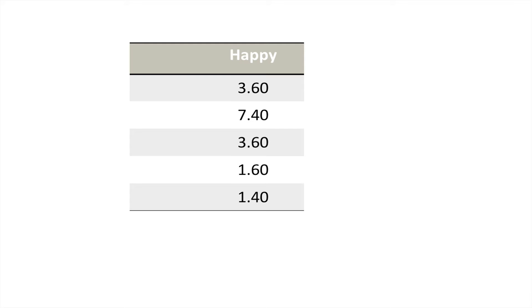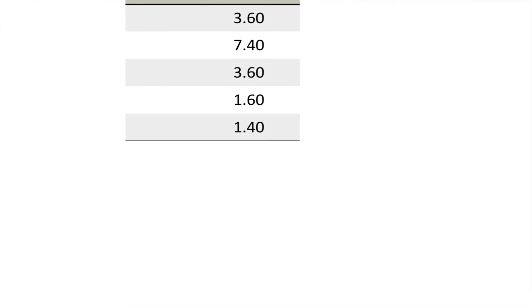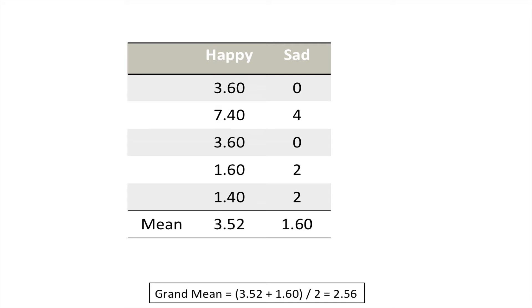Now what we need to do is calculate the mean of these values we just calculated. We're just going to add up all the values and divide by the number of values. I've done that for both groups.